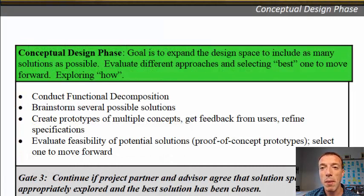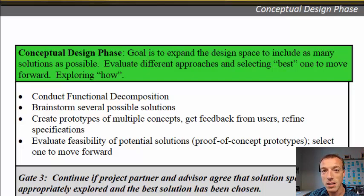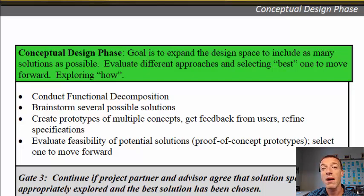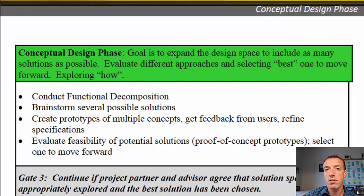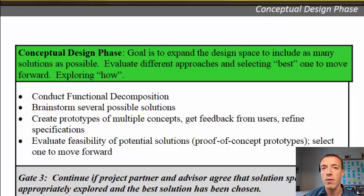The next phase is the conceptual design phase, and this is probably the most fun phase of the entire process — the one students love to spend all their time on. Student teams often try to rush through project identification and specification development in a day so they can get to conceptual design, because this is where you get to be creative, think of new solutions, and start building prototypes. But if you have a poor foundation in your user needs and specifications, it's very unlikely that the ideas you come up with will be successful. You may jump to this point fast, fail quickly — and that's okay — then iterate back into the user needs or project identification phase.